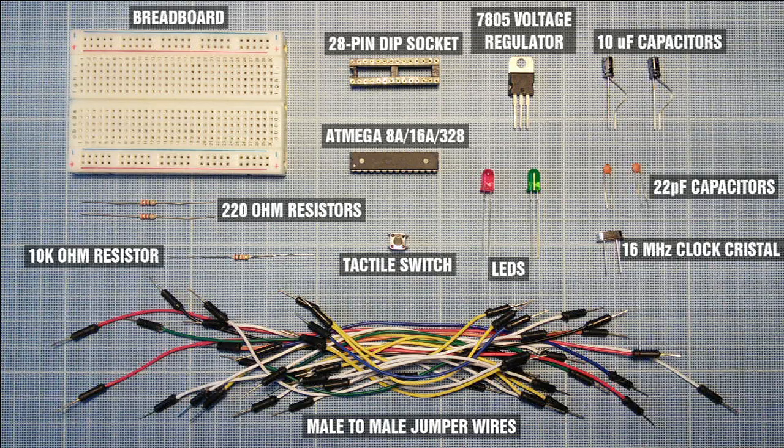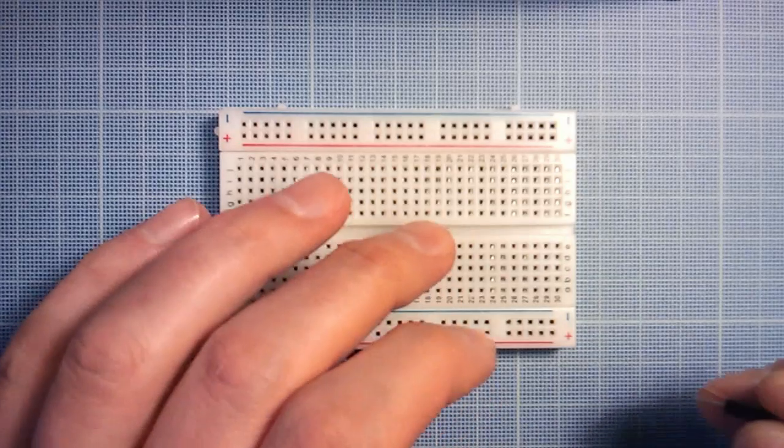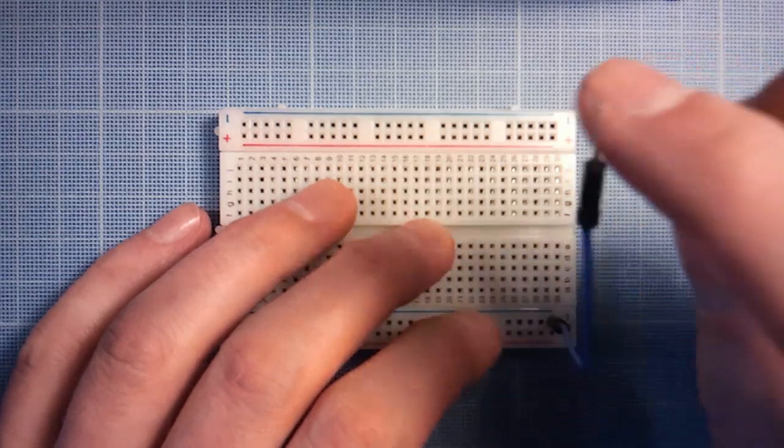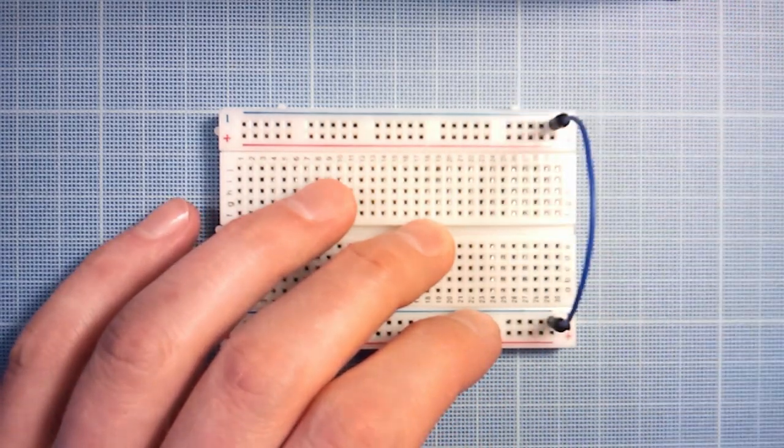You'll need the following parts. Let's get started. First connect both ground rails and both positive rails.